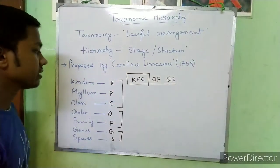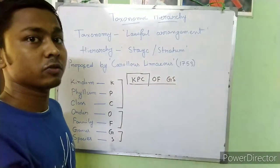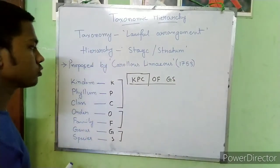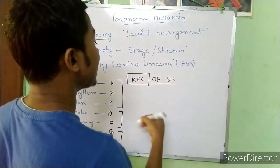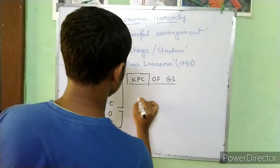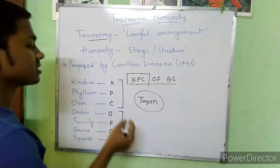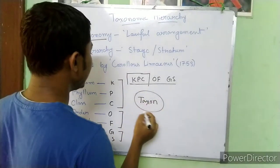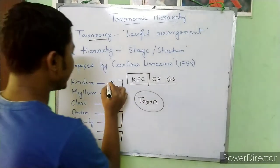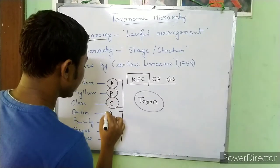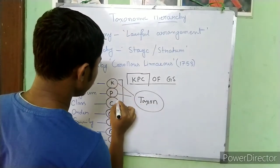So in the KPC arrangement, we arrange organisms in order. In the next part, we will see that taxonomy means lawful arrangement. The term 'taxon' refers to each and every stage of the hierarchy of classification — each stratum or category is called a taxon.